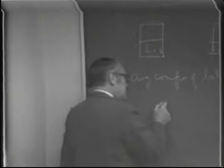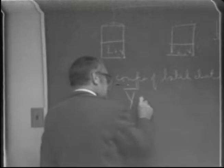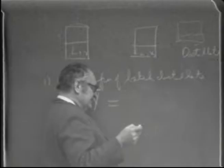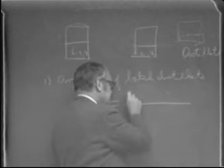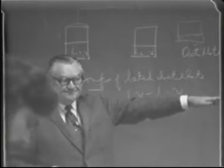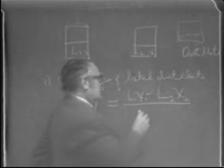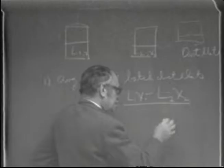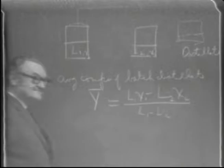The average composition of the distillate, which we sometimes write as Y-bar to denote an average, equals the amount of the more volatile component recovered in the distillate. We get this by difference: taking the original amount present in the liquid minus the amount remaining. This represents the amount distilled. The amount of the distillate is equal to L1 minus L2.